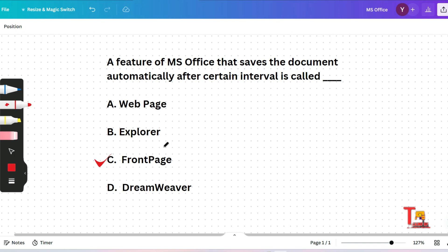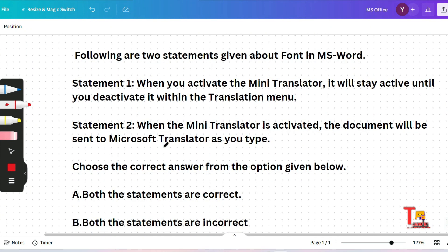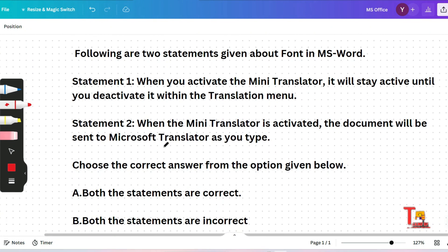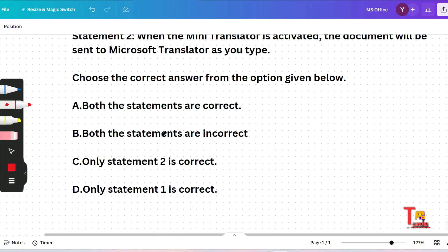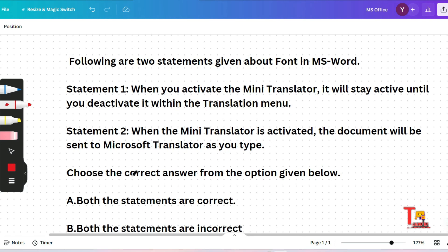The next question is: following are the statements given about font in MS Word. Statement one: when you activate the mini translator, it will stay active until you deactivate it within the translation menu. Statement two: when the mini translator is activated, the document will be sent to Microsoft Translator as you type. There are two statements given. You have to choose the correct answer from the options given below: both statements are correct, both statements are incorrect, only statement two, or only statement one is correct. Please read carefully and think a little then give the answer.